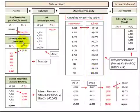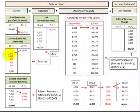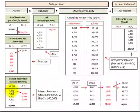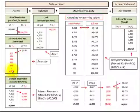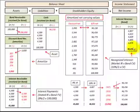Looking at the discount on bonds receivable as a balancing entry between interest receivable and interest revenue: in period one we have a $307 debit to discount on bonds receivable, plus the $4,500 debit for interest receivable, balancing with the $4,807 interest revenue credit. In total, the $3,850 discount on bonds receivable plus $45,000 interest receivable balances with the $48,850 credit in the interest revenue account.